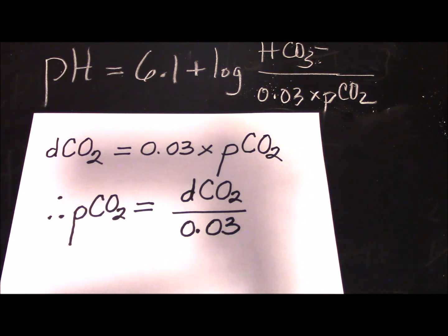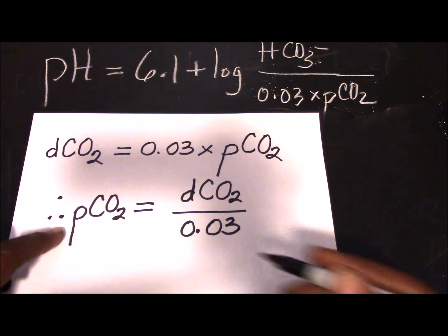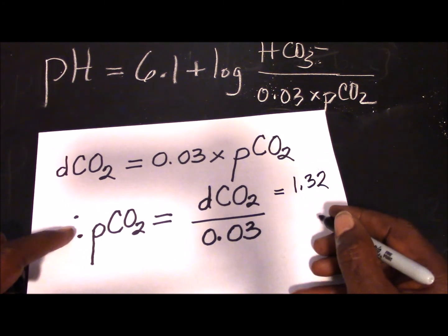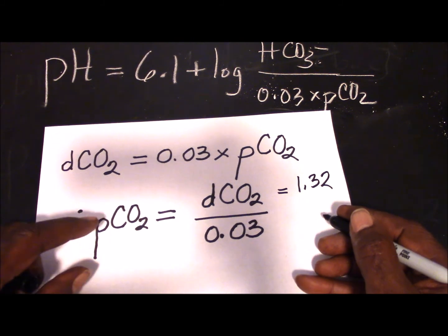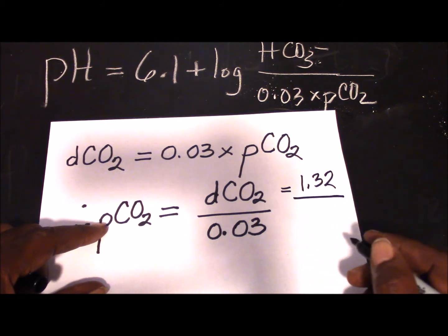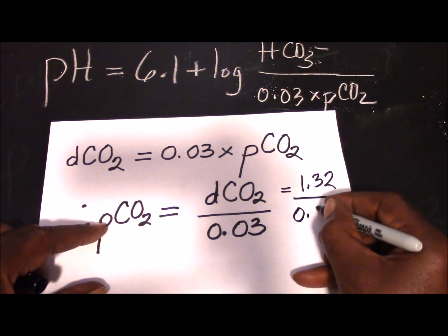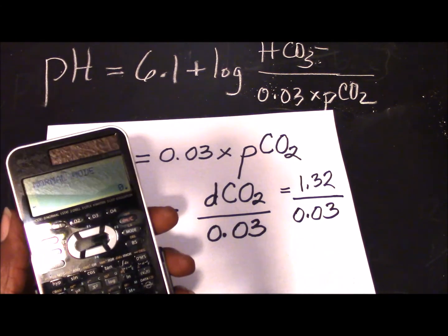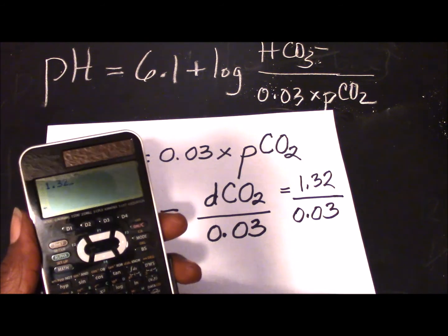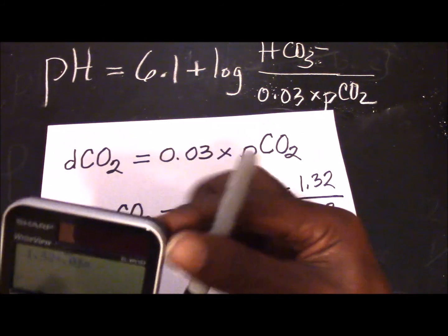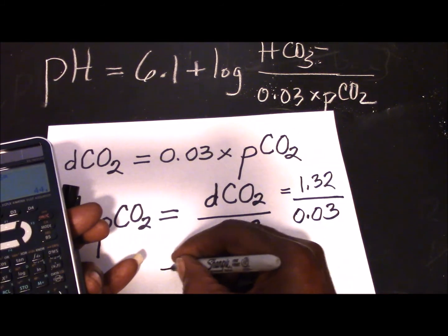And what if the DCO2, for instance, were 1.32? So let us say 1.32 was given to you in the exam and not the PCO2, but what you need to calculate is the PCO2. All you need to do is to divide 1.32 by 0.03. If you do that on your calculator carefully - let us do it together: 1.32 divided by 0.03 - it gives you 44. And so you have 44.